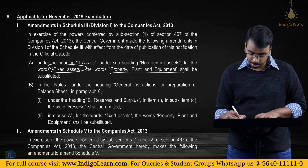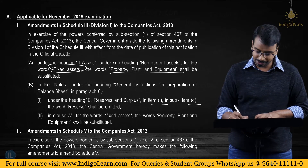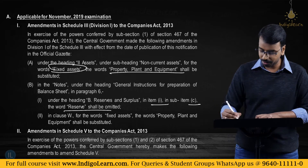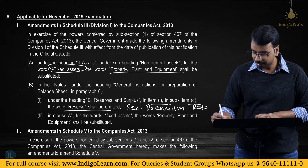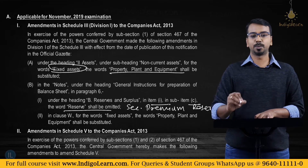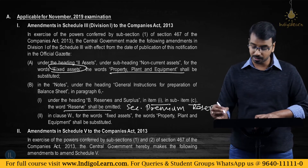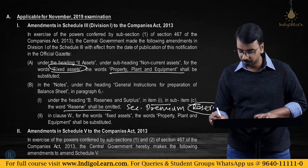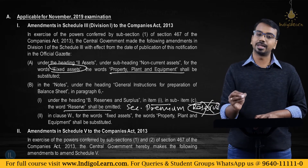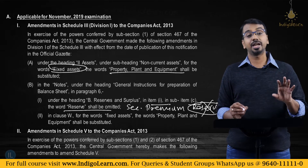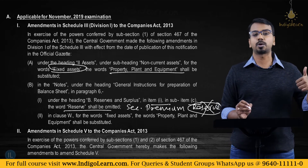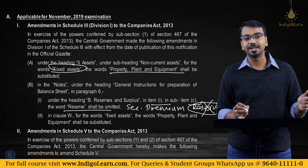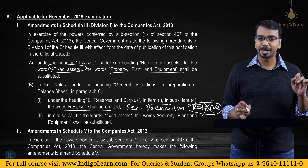The second change is that in item 1, sub-item C, the word 'reserve' shall be omitted. This refers to what was earlier called 'securities premium reserve'. Under reserves and surplus, we used to write 'securities premium reserve', but this is no longer applicable. Now you have only 'securities premium'. This is a change in the format of the balance sheet.